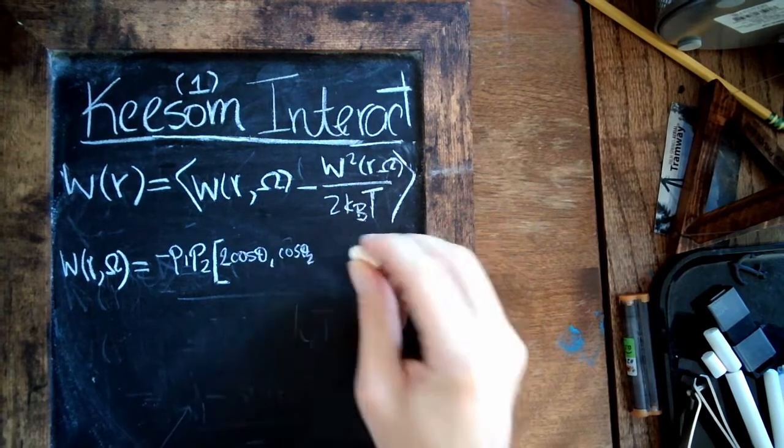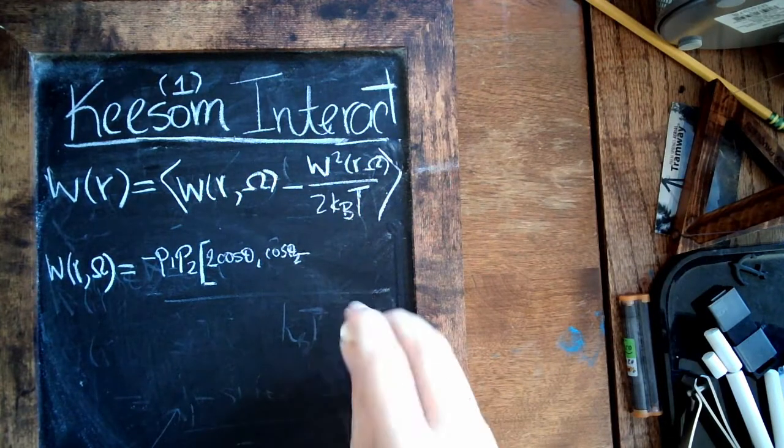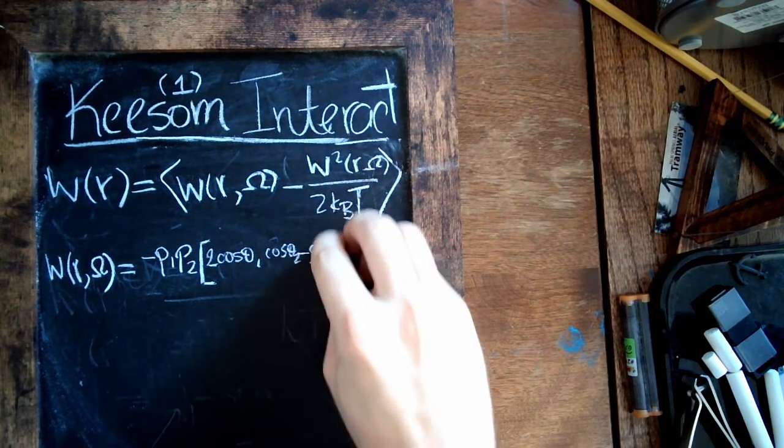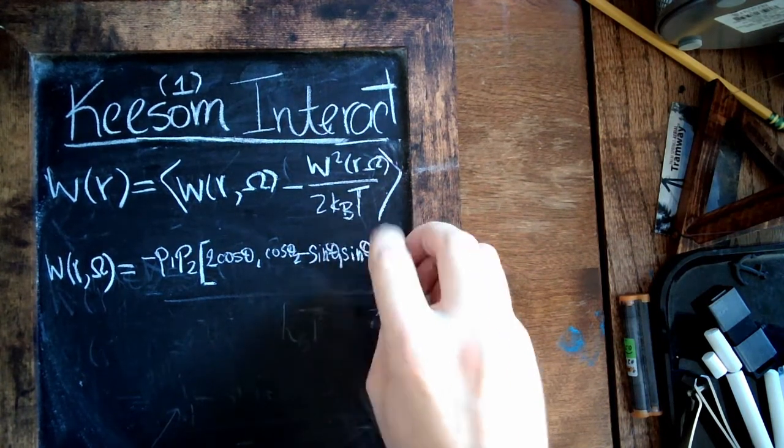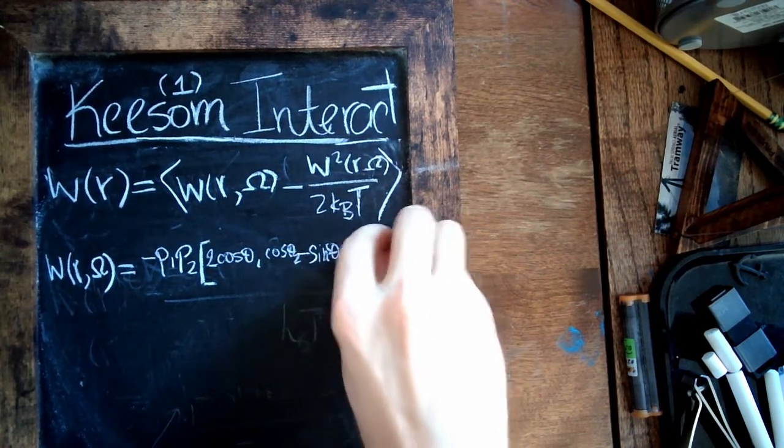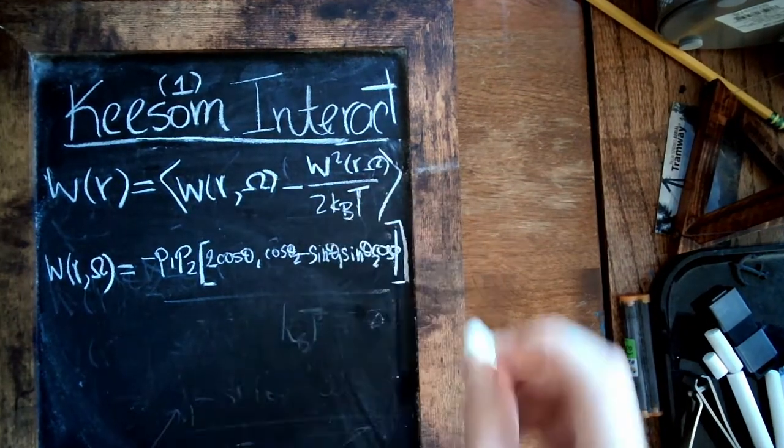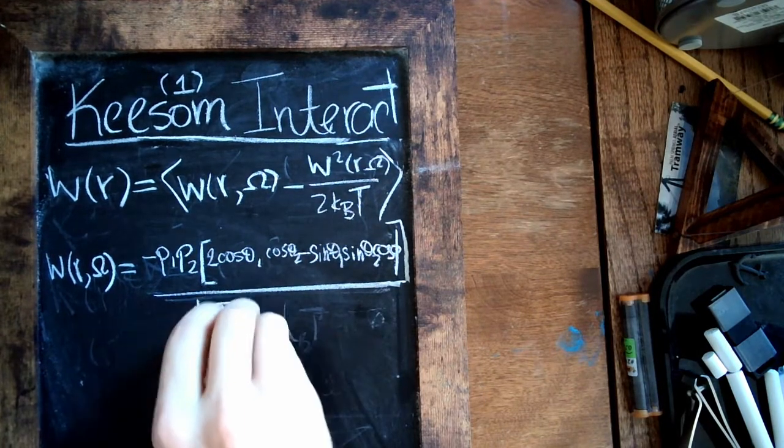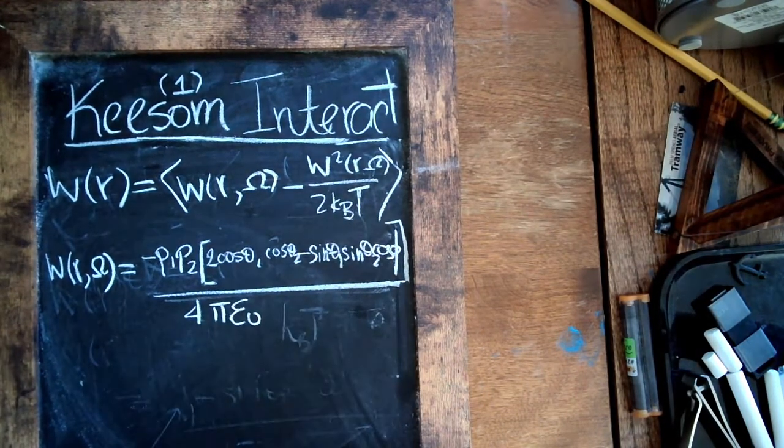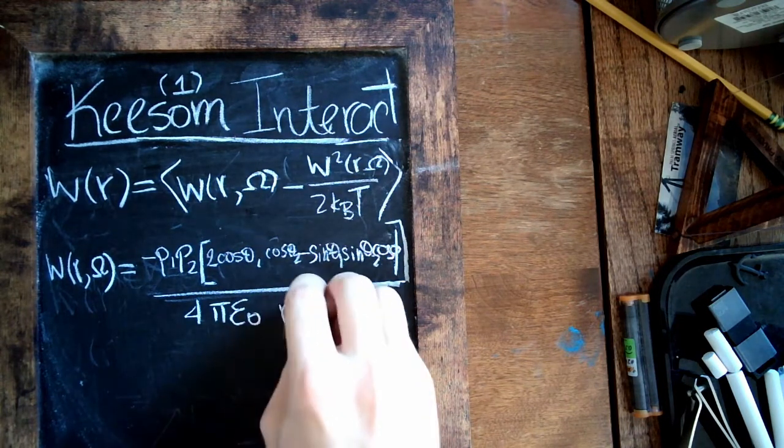Minus sine theta 1, sine theta 2, cosine phi. So some complicated angular stuff. This all gets divided by 4π epsilon_0, our favorite constants from electrostatics, times r to the third.